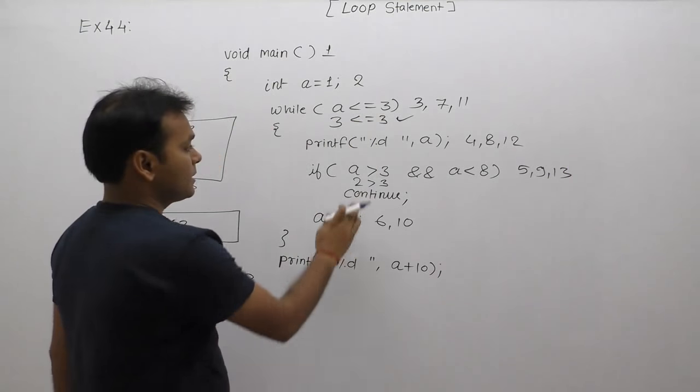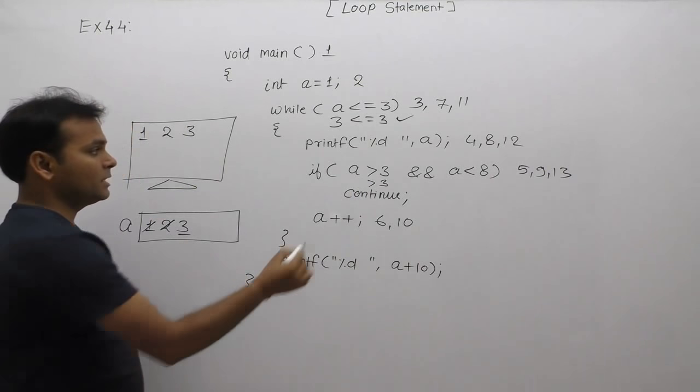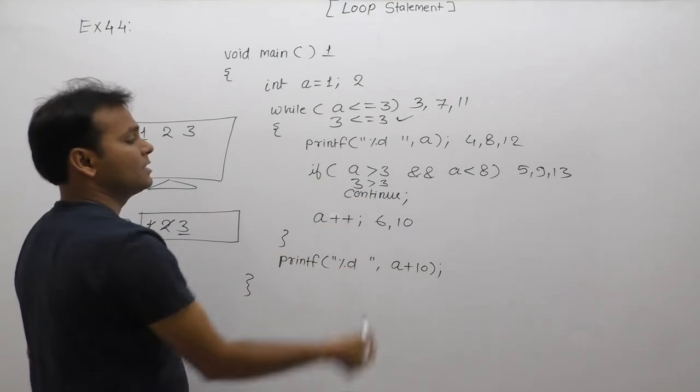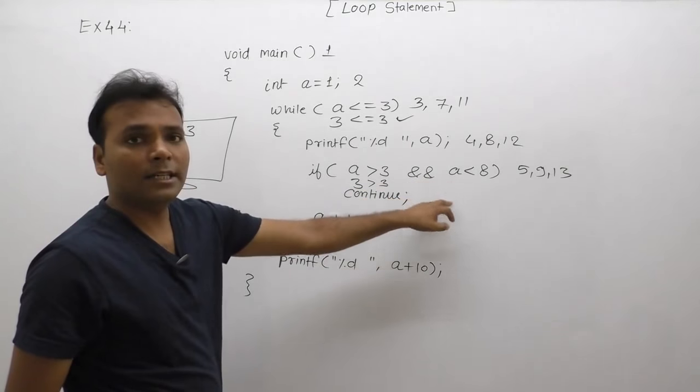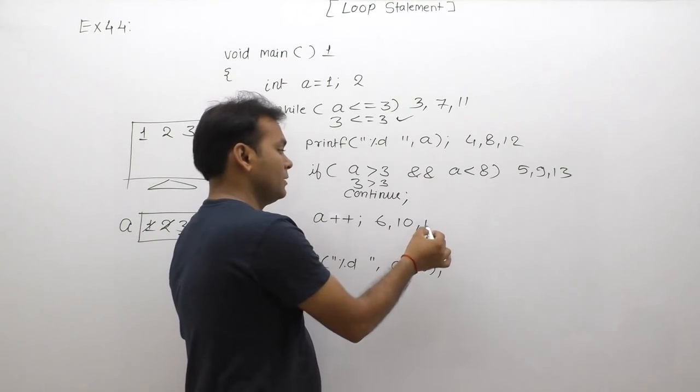Condition test: we replace again with the current value of a which is 3. 3 greater than 3, condition is false. Second condition test cannot be done.